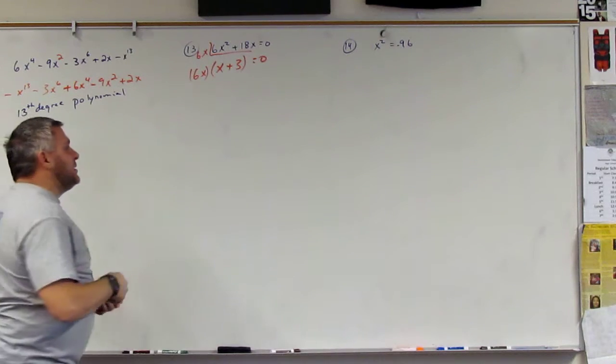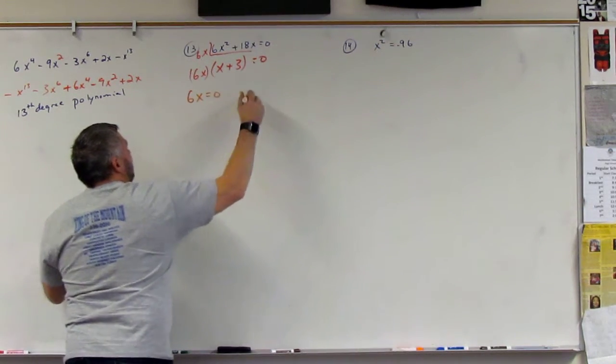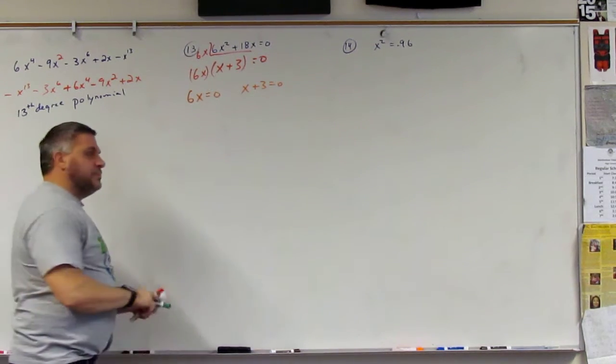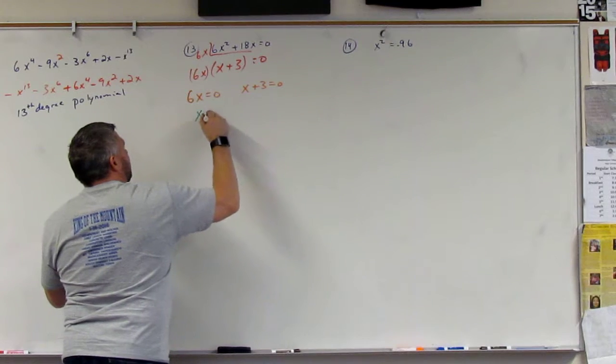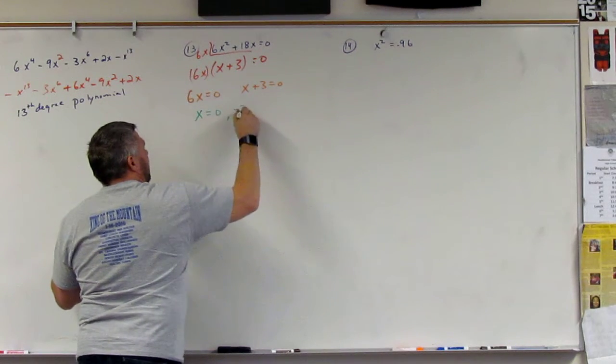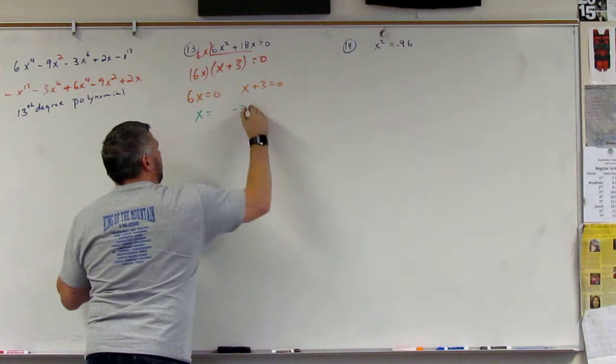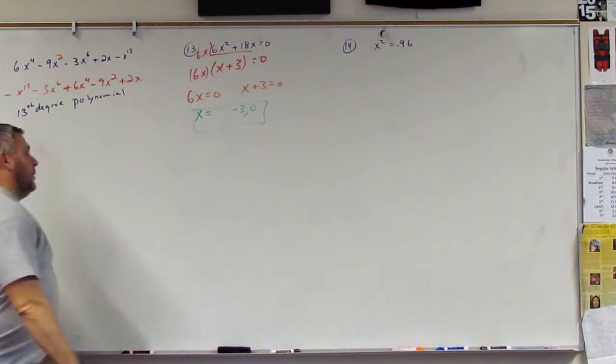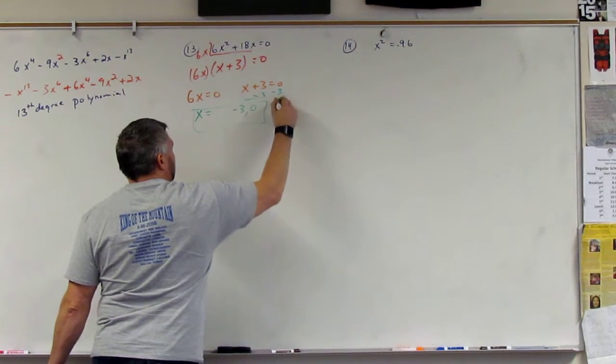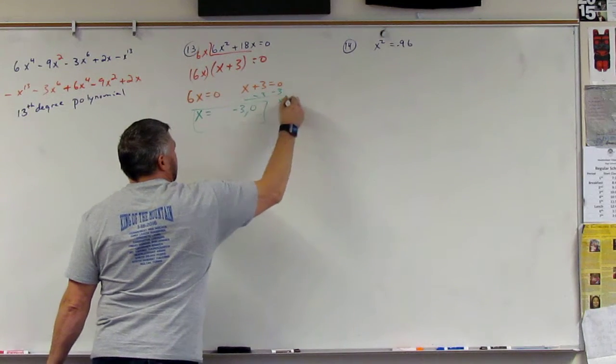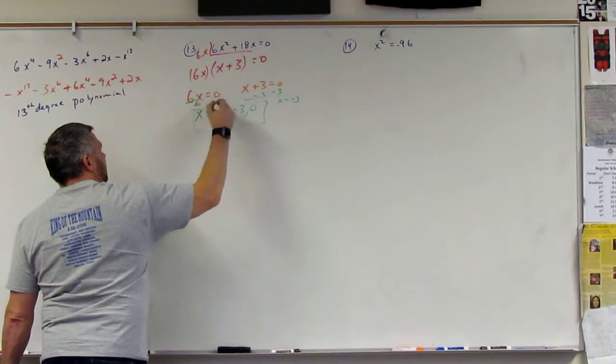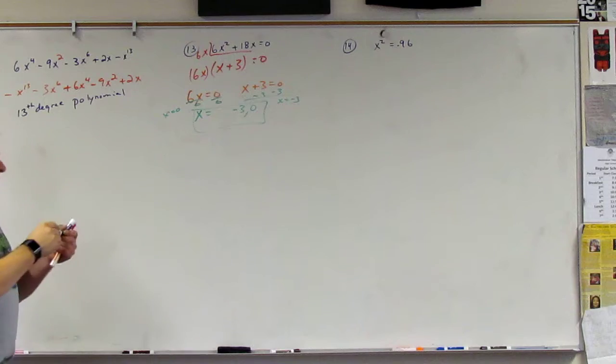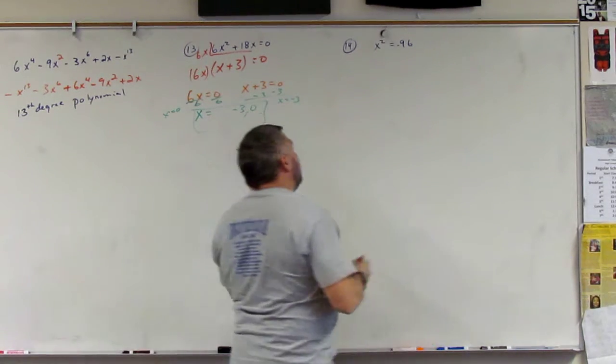So what I'm going to do is set each one. 6x equals 0, and x plus 3 equals 0, and then solve. So x equals 0 and negative 3. I would write it like that, negative 3 and 0. So minus 3, x equals minus 3. Divide by 6, x equals 0. Is that right? All right, next.